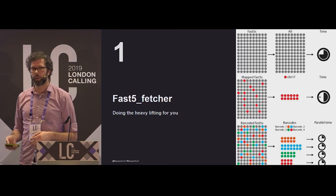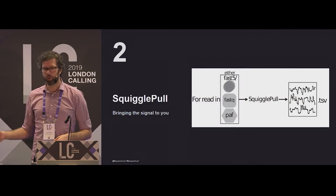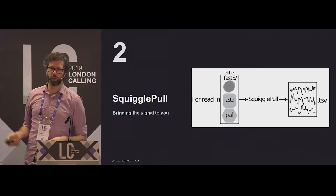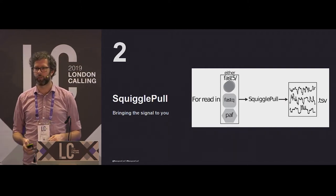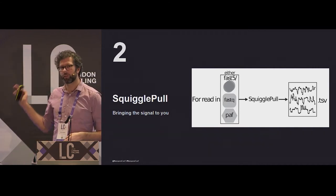And then we get on to the signal stuff, which is for a bit more niche usage. So SquigglePull does exactly what it says. It pulls squiggles. So you can do a little bit of filtering there as well without having to do the Fast5 pulling. But essentially, it makes a TSV file. Everyone knows how to parse a TSV file if you're a bioinformatician, or even not. If you can open Excel,